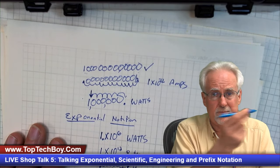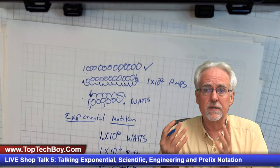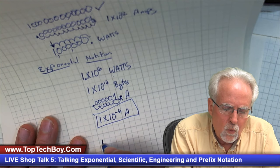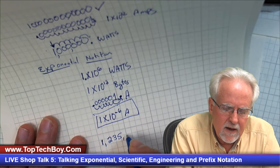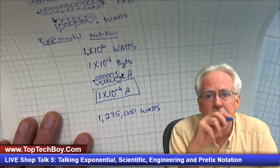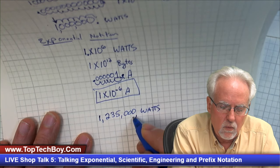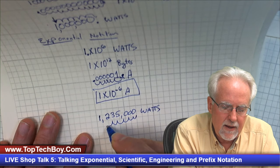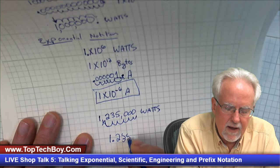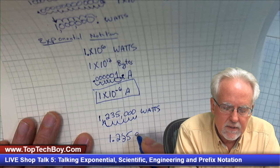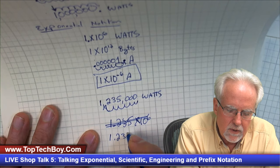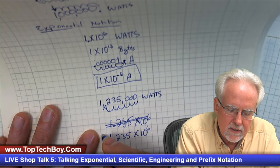You are moving the decimal point either to the right or the left — whatever it takes to get it to the right of the first digit. But what if I had one million two hundred and thirty-five thousand watts? The rule is still the same: move the decimal point to the right of the first digit. I move it six places, so the answer would be 1.235 times ten to the sixth watts.